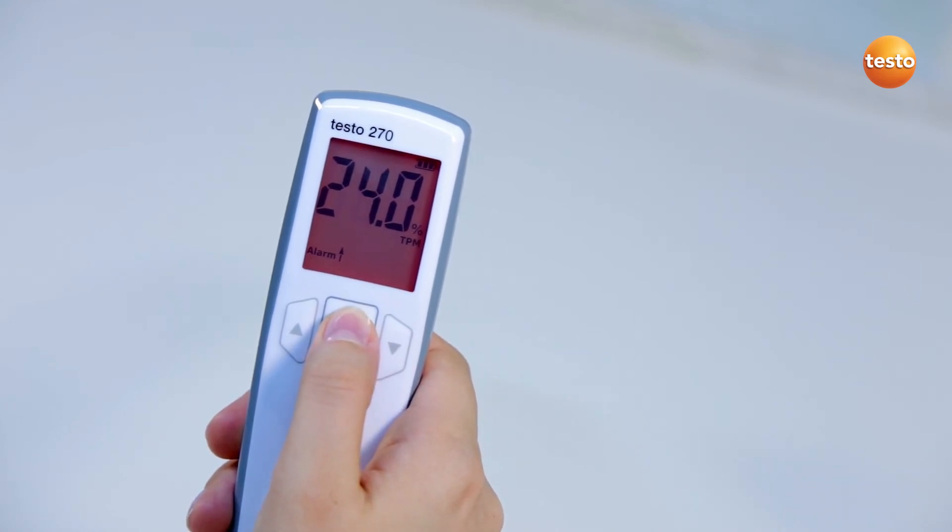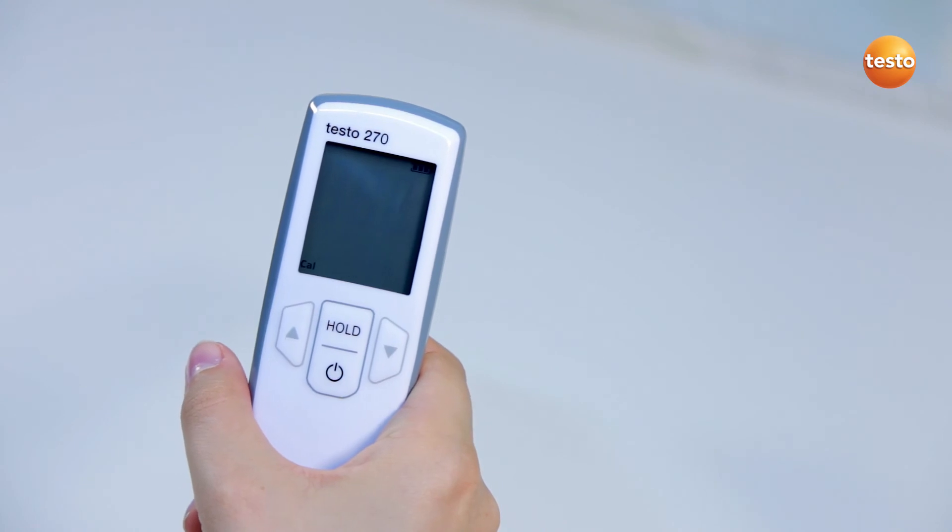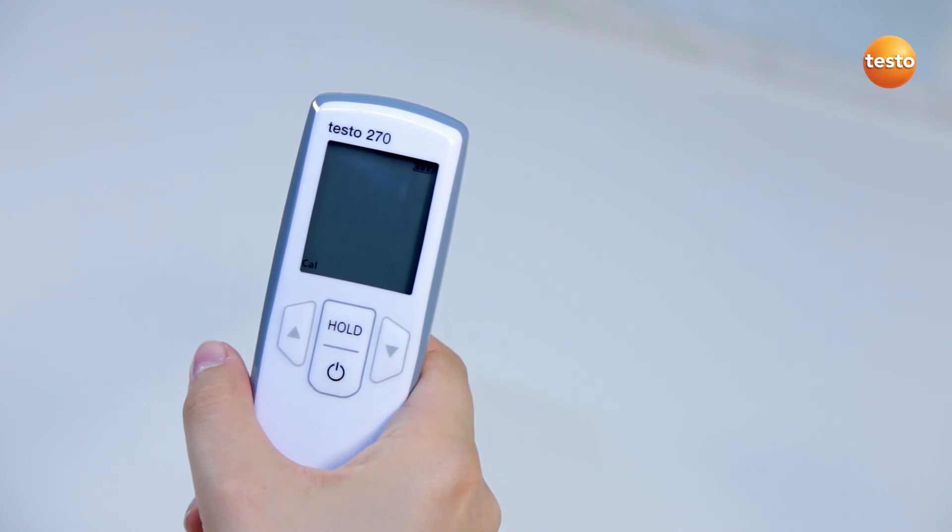To save the adjustments, I confirm with the hold button as before. Only then are the settings for both TPM limit values accepted.